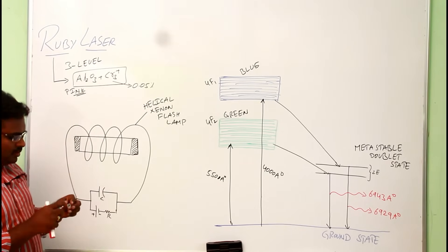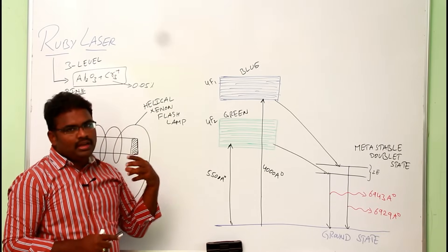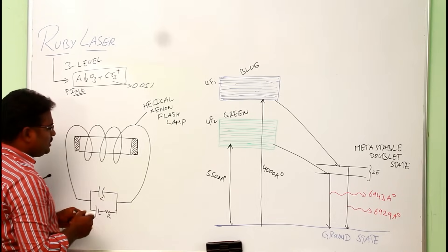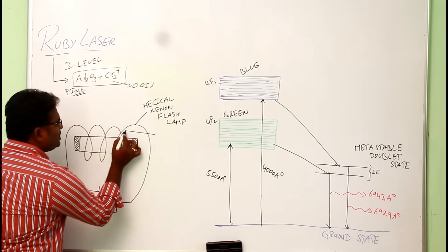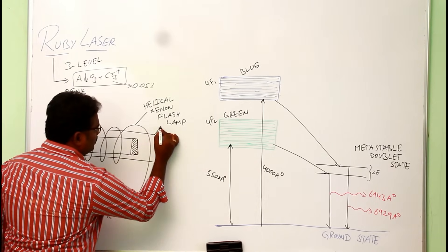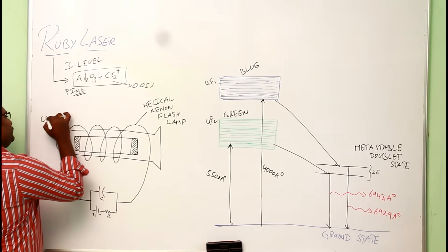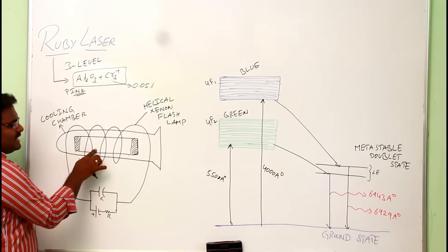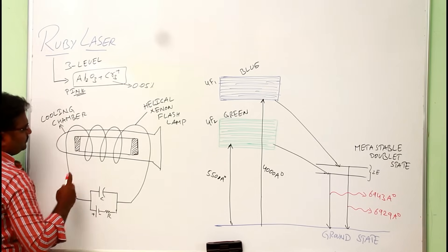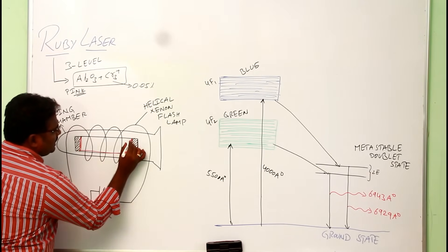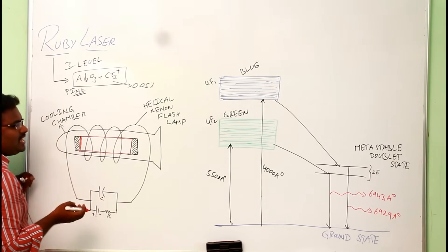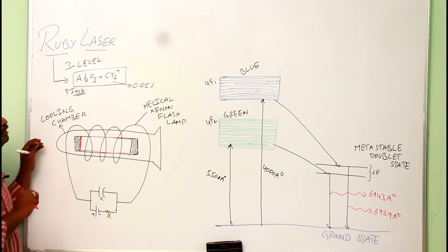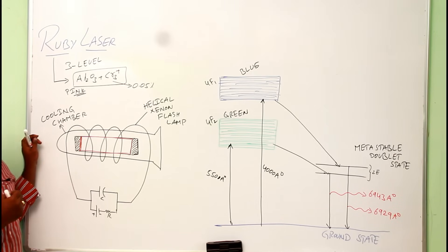A disadvantage is that as the chromium atoms release energy and go to excited states, they release an enormous amount of heat. Due to this heat, the entire system may collapse. So to cool the system, the ruby rod is placed in a cooling chamber, which cools the rod whenever it gets heated. The output of the ruby laser is not continuous — it is pulsated.